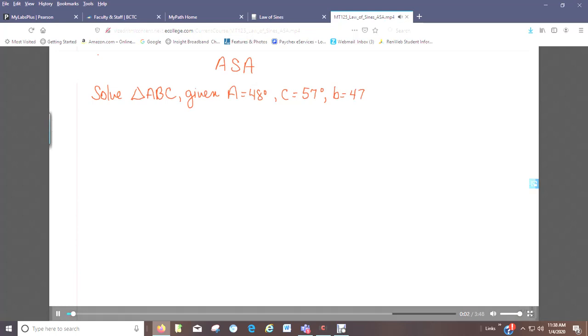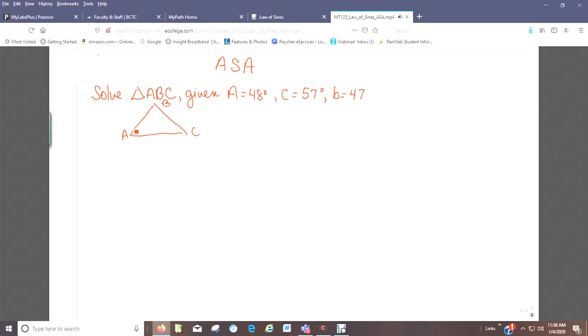Let's look at an example: angle, side, angle. So if I were to draw this triangle that we have the information for, and my drawings are not perfect so you'll just have to bear with me here, angle A is 48 degrees, angle C is 57 degrees, and we know side B which is directly across from angle B is 47. So we have angle, side, angle.